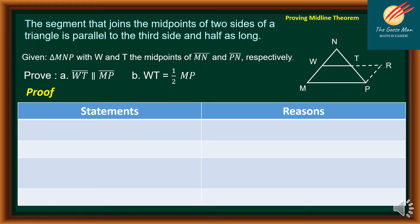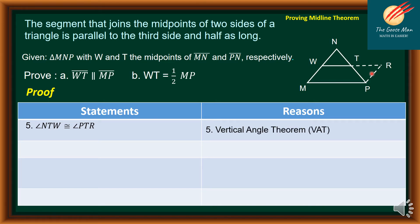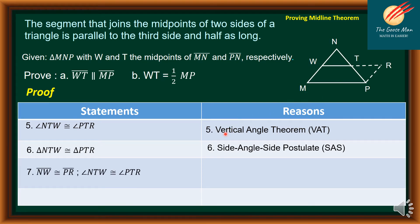Continuing with our proof. Statement 5: angle NTW is congruent to angle PTR — reason is the vertical angle theorem. Statement 6: triangle NTW is congruent to triangle PTR — we have the side-angle-side postulate. Statement 7: NW is congruent to PR, as well as angle NTW is congruent to angle PTR — reason is corresponding parts of congruent triangles are congruent (CPCTC).